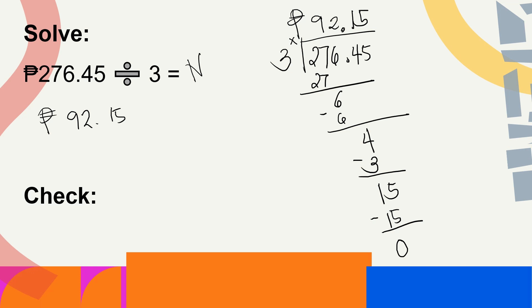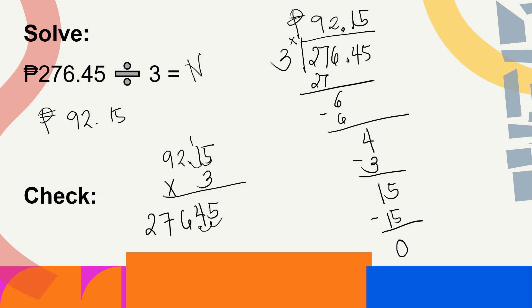To check the problem, from the quotient 92.15, we multiply by the divisor 3. 3 times 5 equals 15, carry 1; 3 times 1 equals 3 plus 1 equals 4; 3 times 2 equals 6; 3 times 9 equals 27. Put the decimal point — count 1, 2 places going to the left — and we get 276.45, which is the same as the dividend.